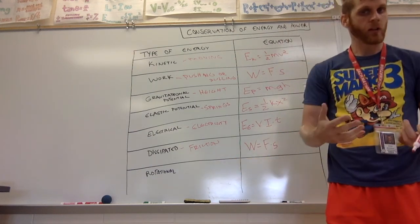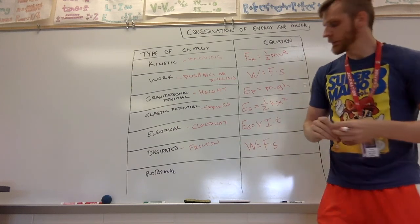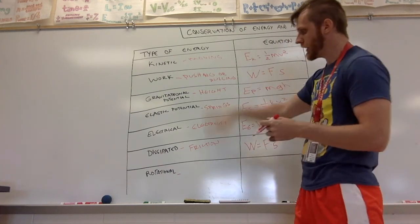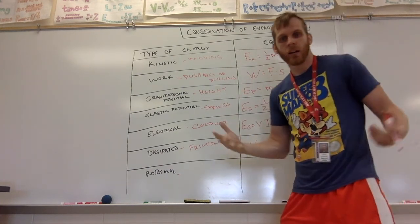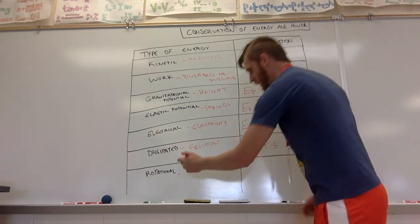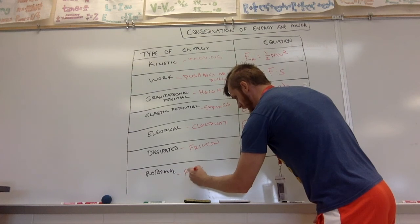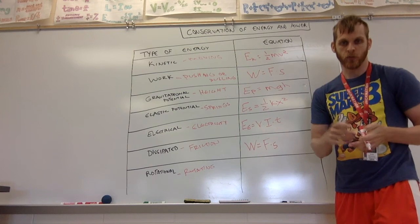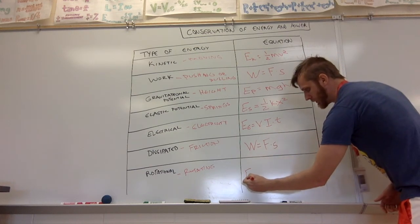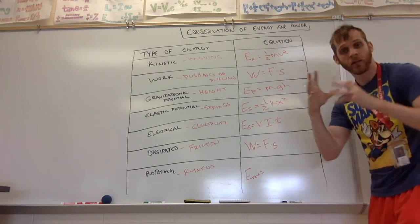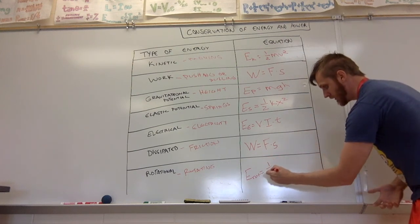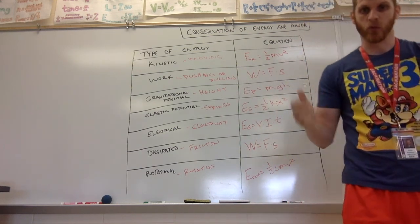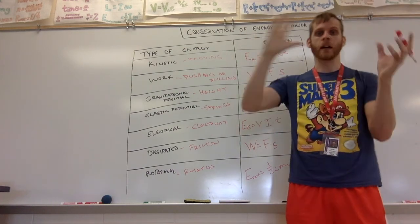One we didn't cover in depth is rotational energy — anything that's rotating or spinning has some rotational energy. This is the one we'll spend the least time on, but it does come up, especially in engineering. The equation is E_rot equals one half times a shape constant times m v squared. We'll mostly ignore it this year, but it comes up for things like a ball rolling downhill.